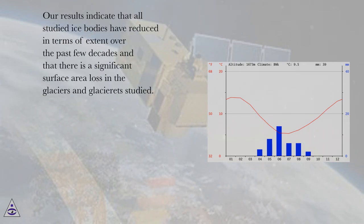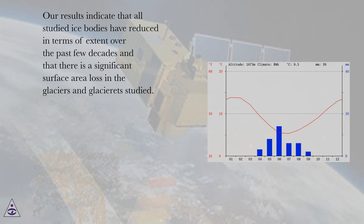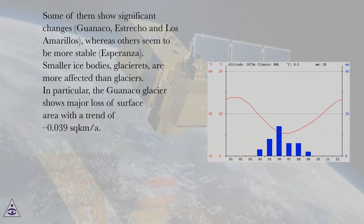The results indicate that all studied ice bodies have reduced in terms of extent over the past few decades and that there is significant surface area loss in the glaciers studied. Some of them show significant changes — Guanaco, Estrecho, and Los Amarillos — whereas others seem to be more stable, such as Esperanza.